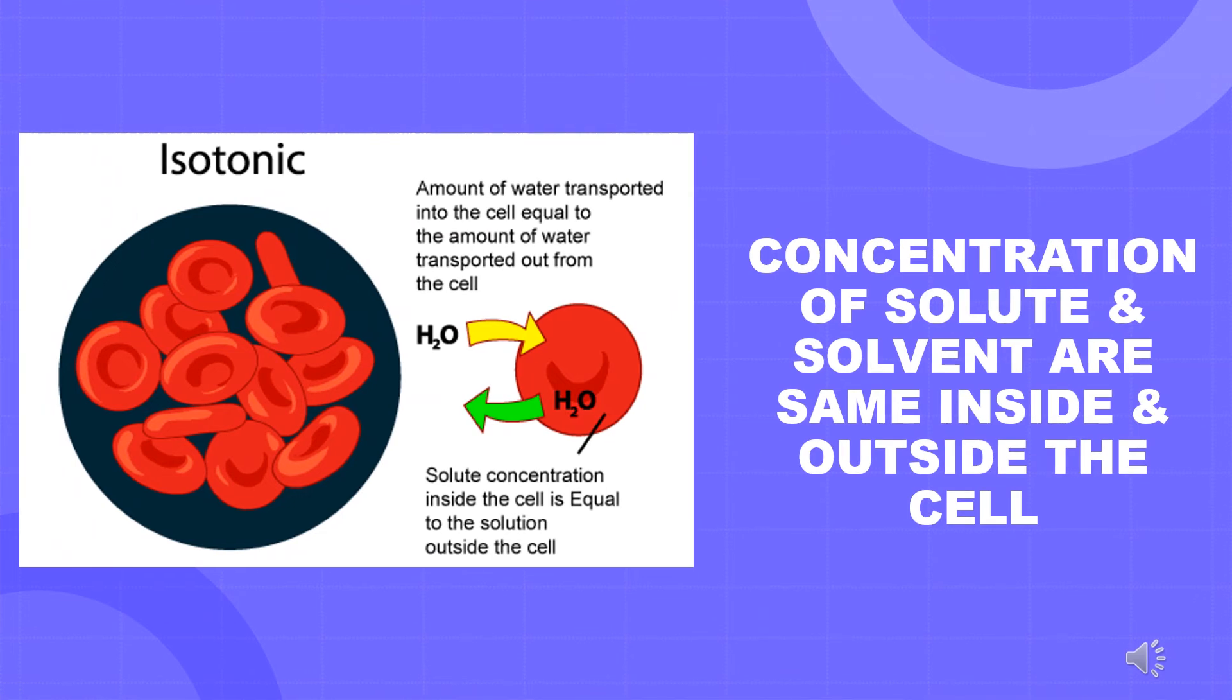The third one is an isotonic solution. The relative concentration of water molecules and the solute on either side of the cell membrane is the same. In such a solution, there is no net movement of water molecules across the cell membrane.